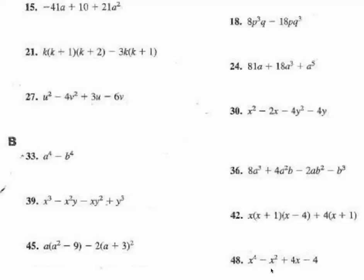All right, so we're using several forms of factoring, and I'm going to start with problem 21 and see how far I can get in 15 minutes. The first thing I'm going to do is — we have two factored form expressions, and for me to be able to factor this I need to expand it. So using rainbows and smiley faces, I'm going to end up with k times k squared plus 3k plus 2.